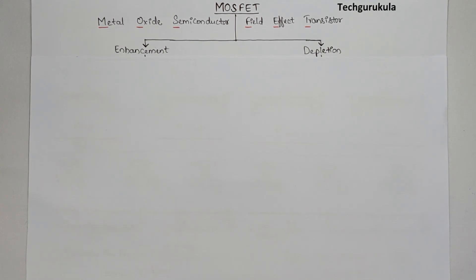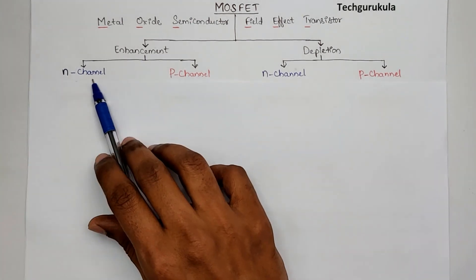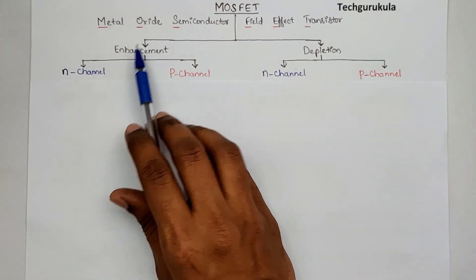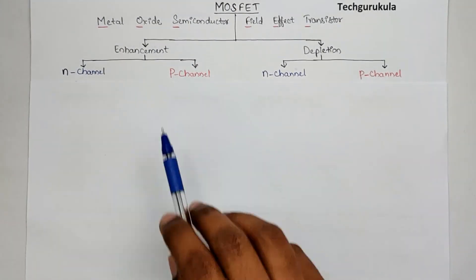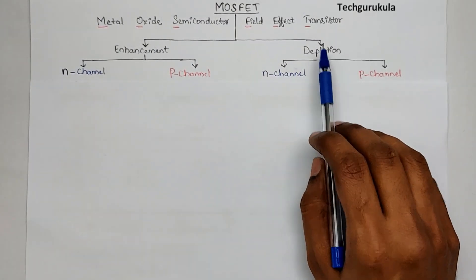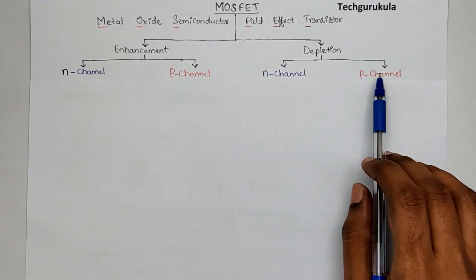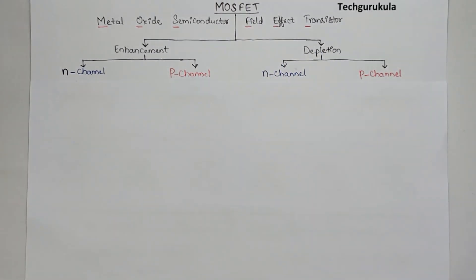Each of these is further divided into two subcategories based on the channel type: N-channel enhancement MOSFET, P-channel enhancement MOSFET, N-channel depletion MOSFET, and P-channel depletion MOSFET.